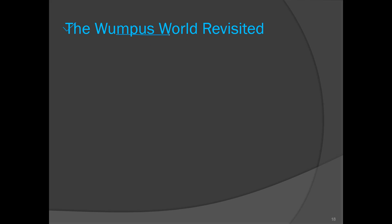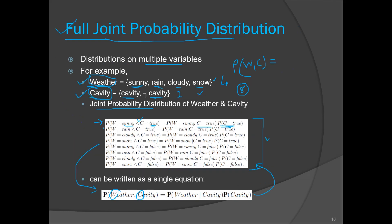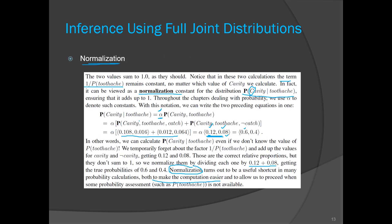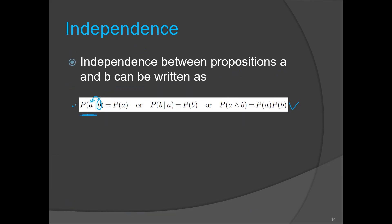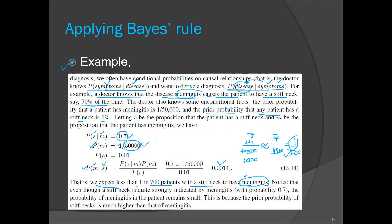In tomorrow's lecture we will discuss Wumpus world, where our agent will be a probabilistic agent. In the previous unit, the agent was a logical agent deriving facts based on inference rules. Now, the agent will derive the probability of a room having a pit and say the probability with a certain value based on given data. For inference you need a joint distribution, and then you apply inference rules — mostly the product rule — along with independence and Bayes' rule.